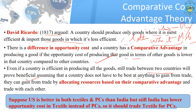Because no country can be best at everything it produces, countries can gain from trade by allocating resources based on comparative advantage and trading with each other.